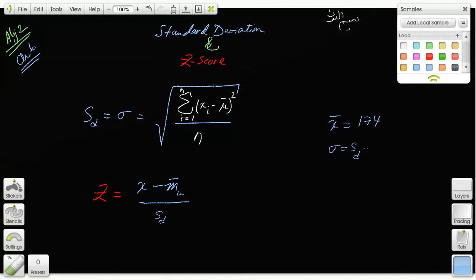And the standard deviation, lowercase sigma standard deviation, was 14. If somebody's cholesterol score, let's say, was 150, what would be the z-score?